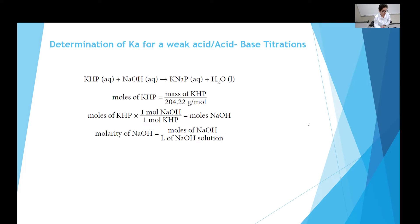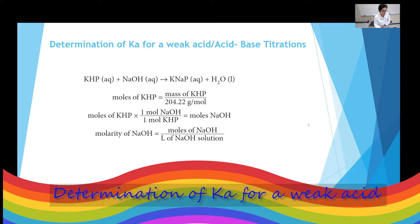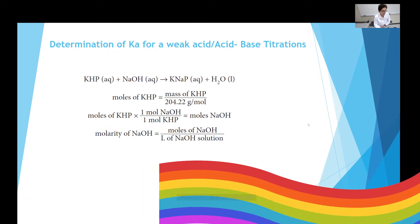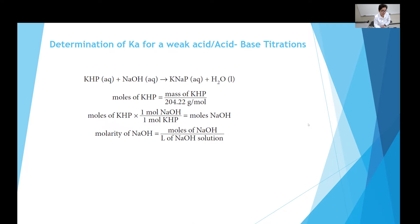Experiment 4 is about determination of Ka for a weak acid using titration. In this titration, we have a two-part experiment.